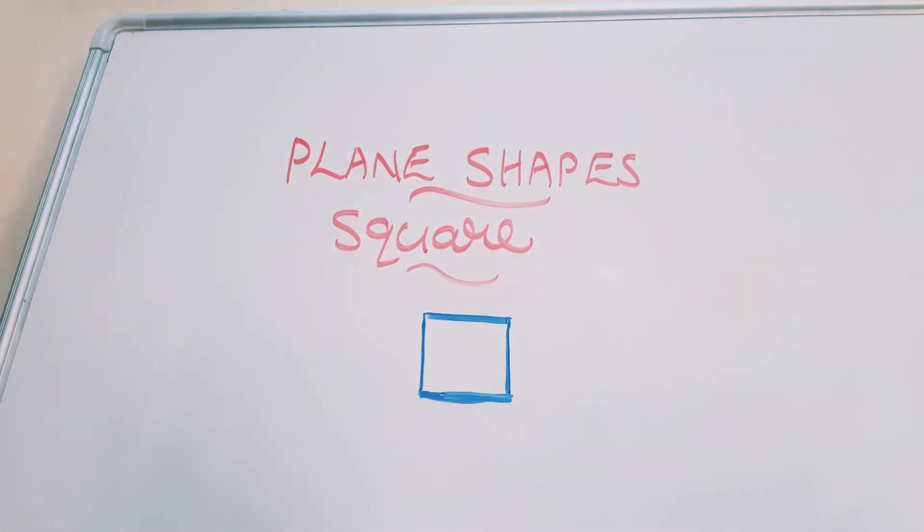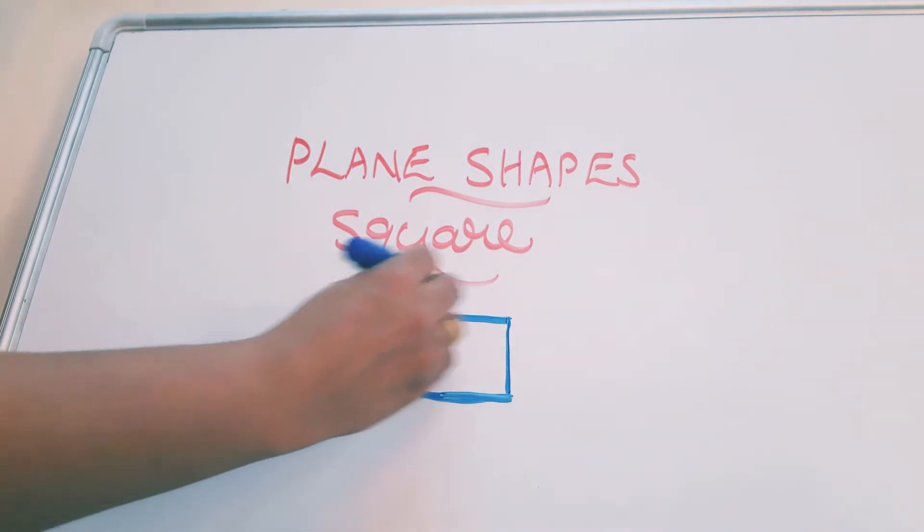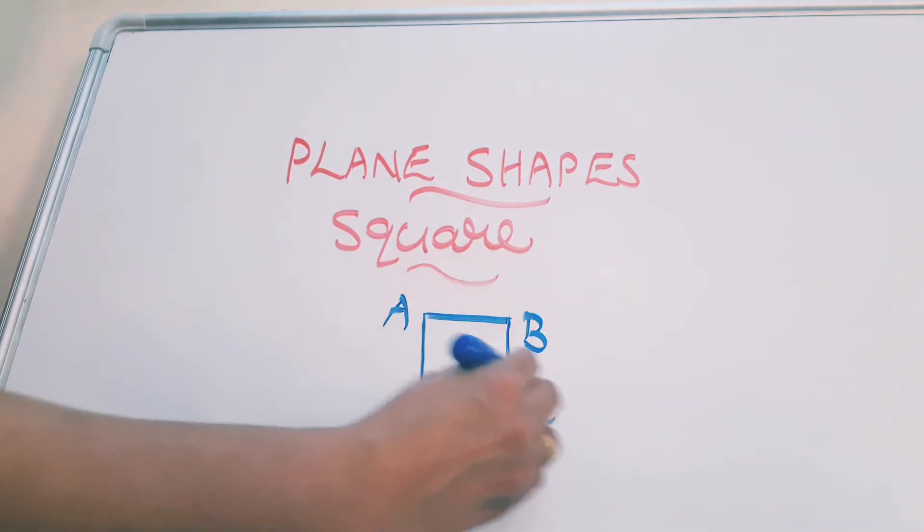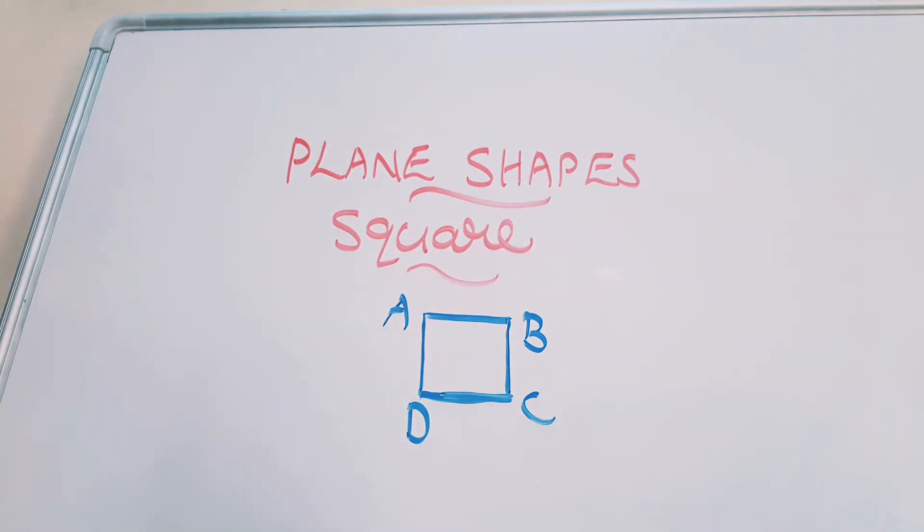Suppose if I take an example called square ABCD. Here I am giving name ABCD. Then how to name this square? Square ABCD. Then how to write its sides? A rectangle has four sides. Similarly a square is also having four sides.